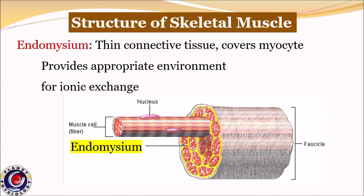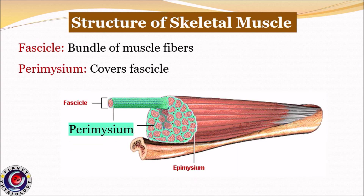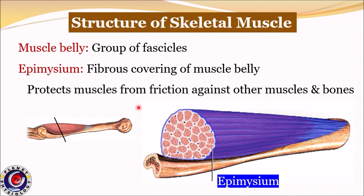Each muscle fiber is surrounded by a thin connective tissue called endomysium. It provides an appropriate environment for ionic exchange, which is necessary for the contraction process. A number of muscle fibers are grouped together to form a muscle fascicle, and each fascicle is covered by another connective tissue called perimysium.